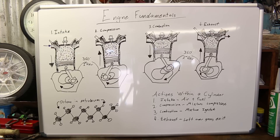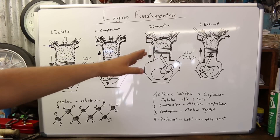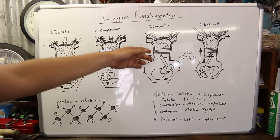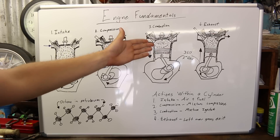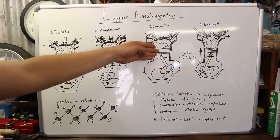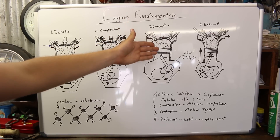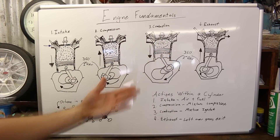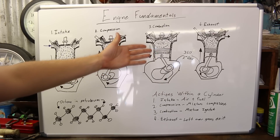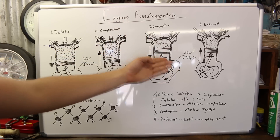Now we're moving on to the fourth and final stroke — the exhaust stroke. Before getting into it, one important thing: once a chemical reaction occurs, those substances change into a completely new substance. So after the explosion, the air and fuel inside the cylinder change into a new substance — that is essentially where exhaust gases come from. They don't burn as efficiently, so we need to expel them.